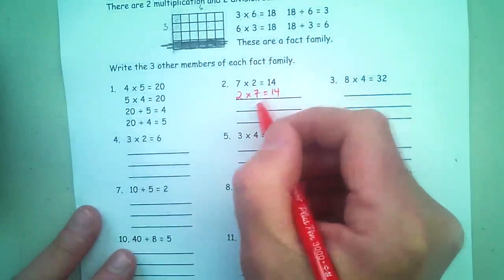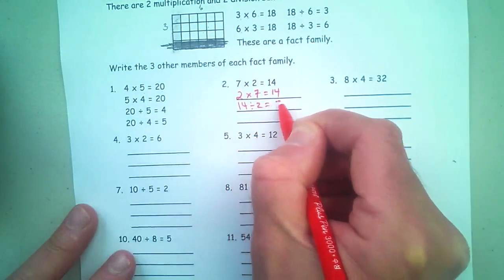Now, the last two would be division. So you always start with the biggest number, okay? And that's something to remember. Always start, because how you read this is 14 divided by 2 equals 7.